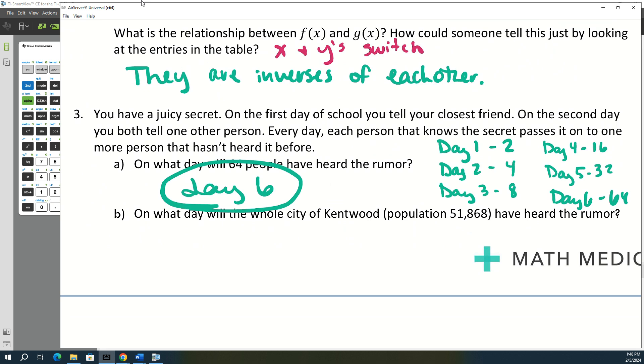All right, and then for B, on what day will the whole city of Kentwood, which has a population of 51,868, have heard the rumor? Now I don't want to keep multiplying by 2 until we get to that. So we can do it another way. So we can, if we want to know the power, then we can write a logarithm. What should the base of our logarithm be?